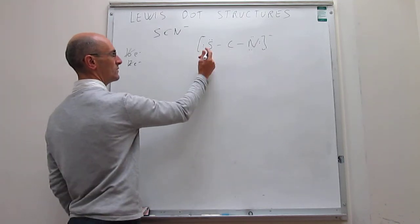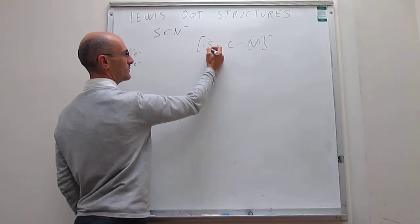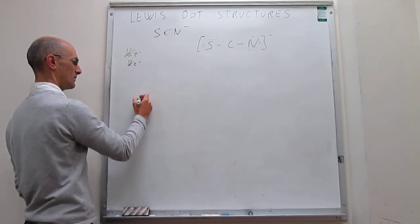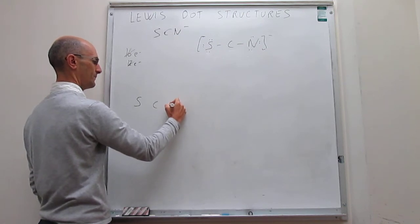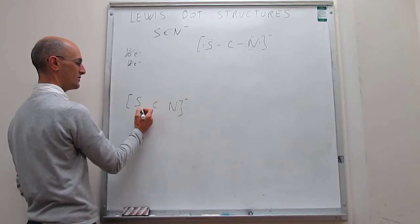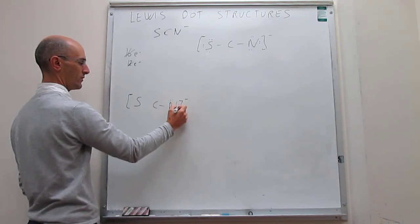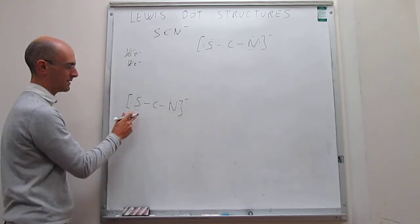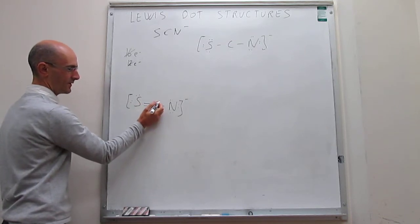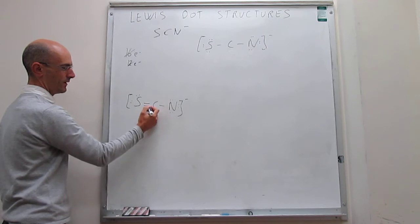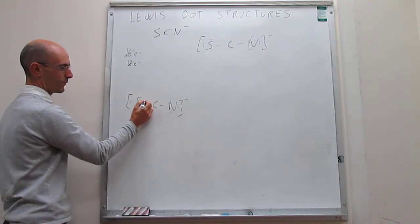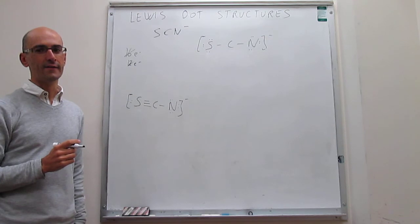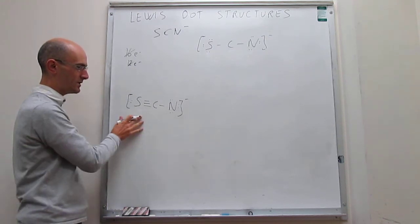The first resonance structure assumes multiple bonds to carbon caused by lone pairs on sulfur acting as bonds between sulfur and carbon — SCN with a triple bond between sulfur and carbon. Taking one lone pair makes a double bond, but that is still only a sextet for carbon, so we take another lone pair to form a triple bond. In this case, the resonance structure satisfies the octet rule for all of the atoms, so that would be a legitimate Lewis dot structure.